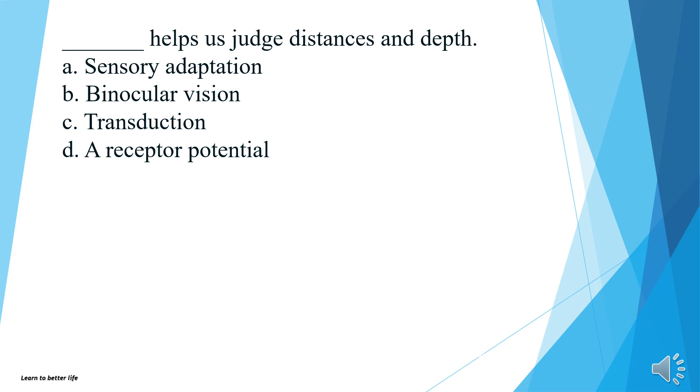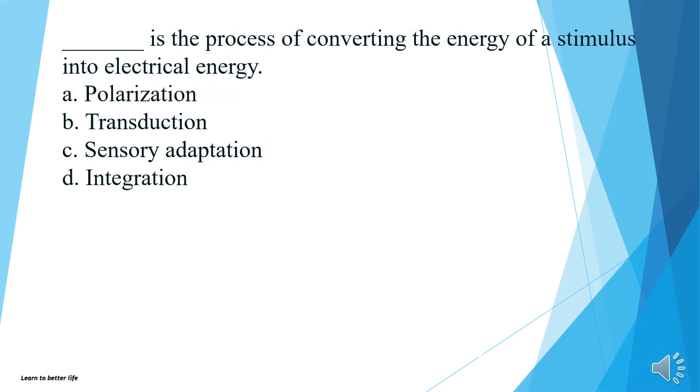What helps us judge distances and depth? Sensory adaptation, binocular vision, transduction, or a receptor potential? The answer is B, binocular vision. What is the process of converting the energy of a stimulus into electrical energy? Polarization, transduction, sensory adaptation, or integration? The answer is B, transduction.